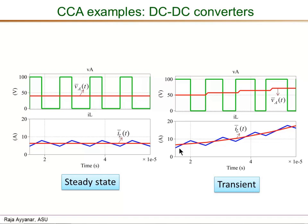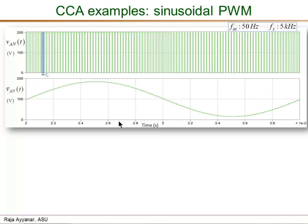The CCA definition is valid whether it is in steady state or in transient. The CCA definition is not only valid for DC-DC converters; it is also valid for any other power converter type, like DC-AC or AC-DC converters as well.